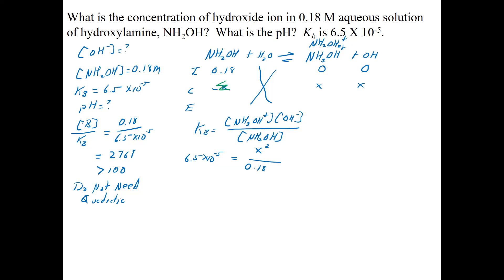I multiply both sides by the 0.18, so I have 6.5 times 10 to the minus 5 times 0.18 is equal to X squared. That gives me 1.17 times 10 to the minus 5 is equal to X squared. I take the square root of both sides.